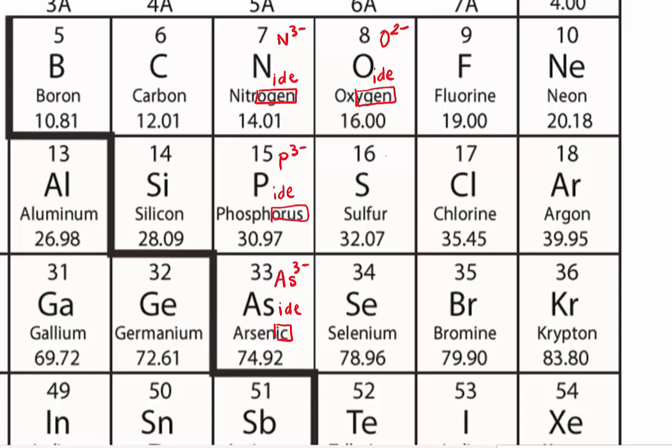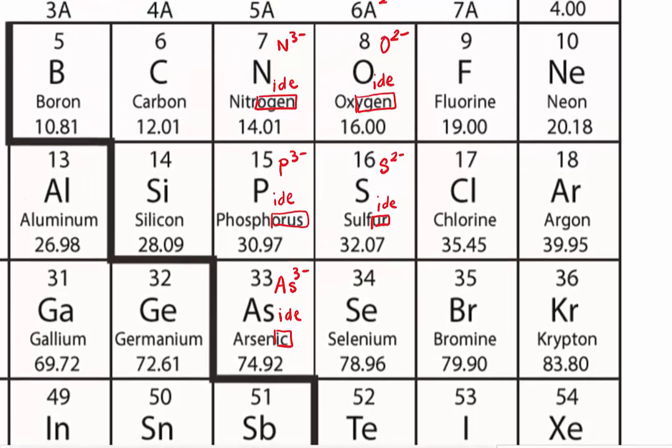What about sulfur? The formula for sulfur ion is 2 minus, but we don't call it sulfur ion. We drop the ending of sulfur, which is U-R, and we add that ide. So sulfide. So the formula for sulfide is S2 minus. And we also ignore selenium for now. Let's go over here.